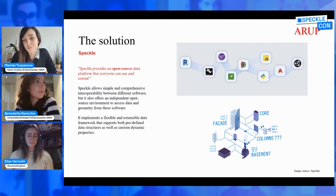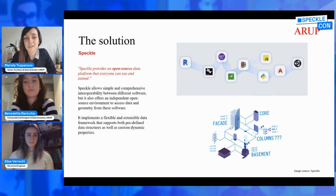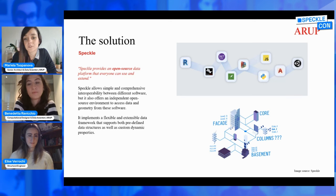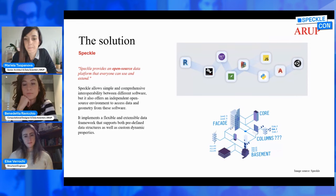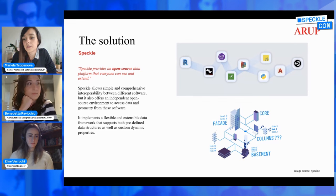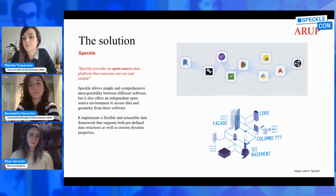For us in Arup, the solution has been Speckle, as it solves both of these challenges. It allows for simple and comprehensive interoperability between different software, but it also offers an independent open-source data environment from where we can access all information and geometry. It implements a data mechanism that supports both predefined and custom data schemas, stored in a format suitable for complex projects and accessible via the Speckle APIs. We use predefined schemas for software like Revit and GSA, and custom ones for report automation, drawing automation, and designing custom dashboards.